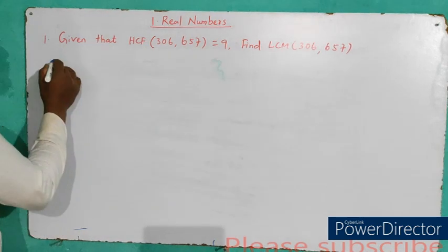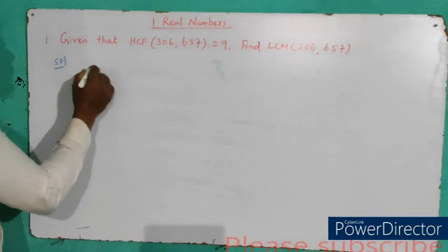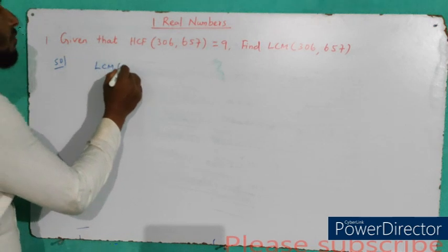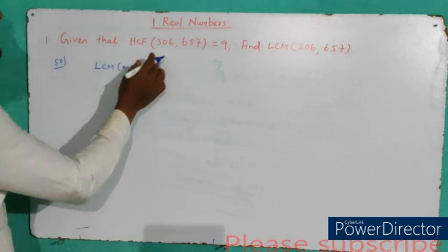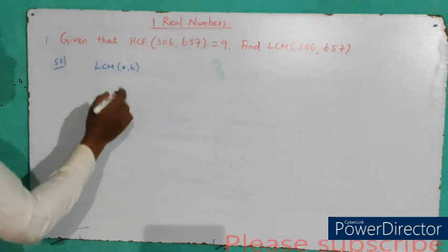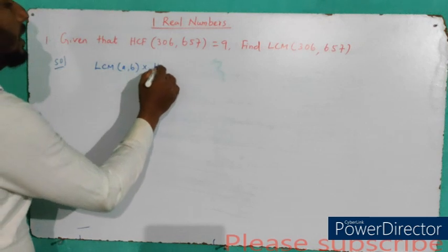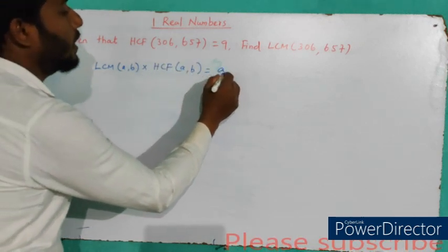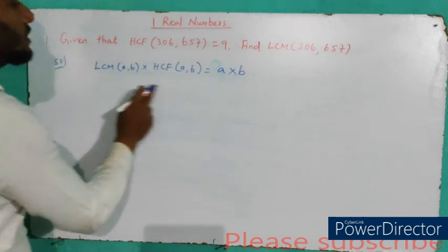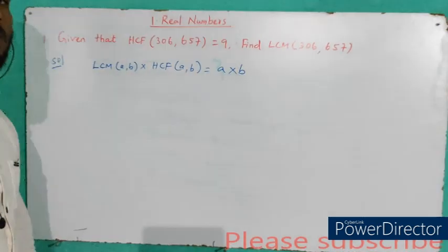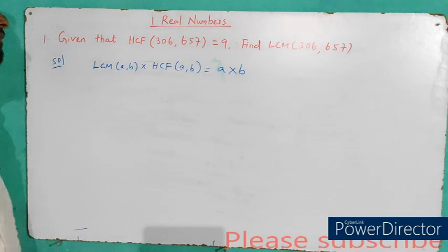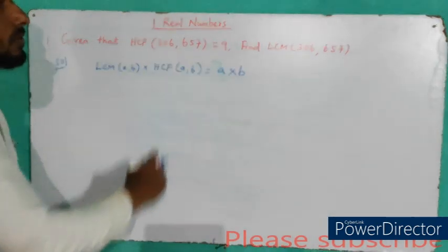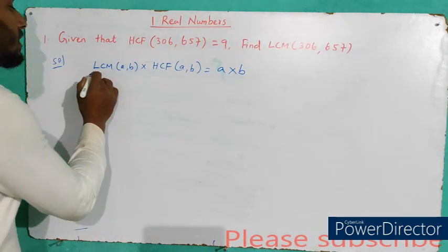We know the formula: LCM of (a, b) multiplied by HCF of (a, b) is equal to a into b, where a and b are the two numbers. This is the formula for the relationship between LCM and HCF. Let's apply the given data to find the LCM.